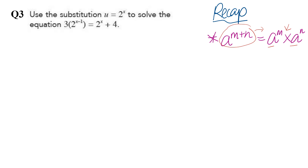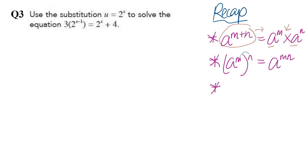Most of the time we'll be working from left to right. The second rule is where you need to open up the brackets by multiplying the exponents or the power. The third one is converting a negative exponent into a positive one. So these are the three very commonly used indices rules to solve exponential equations.